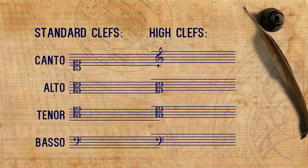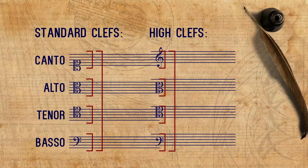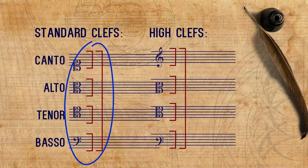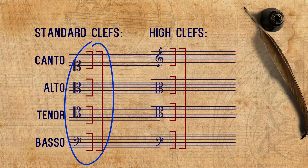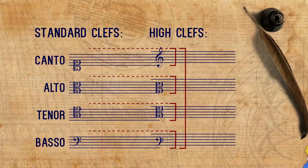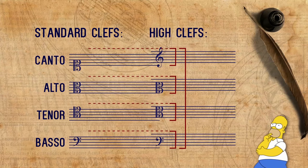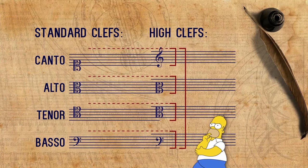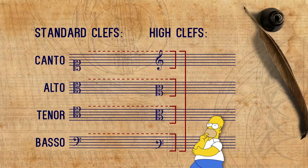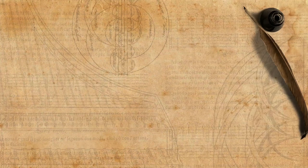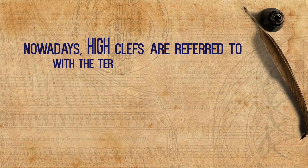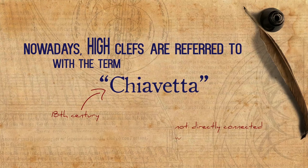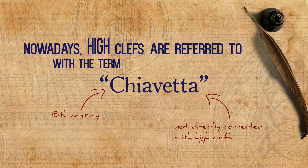So here is our problem. Pieces written in high clefs have a similar overall range to pieces in standard clefs — the range is simply shifted upwards. But if these are the good ranges as described in the sources, what are we to understand from the higher ranges of the high clefs? Is it an extension of the ranges, or do the two sets actually imply the same range? By the way, nowadays high clefs are referred to with the term Chiavetta. Historically, however, Chiavetta is an 18th century term not directly connected with high clefs — therefore, we call it simply high clefs.